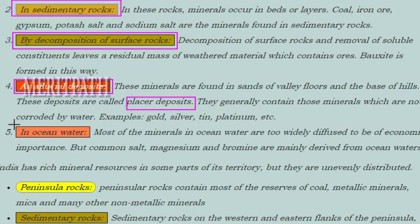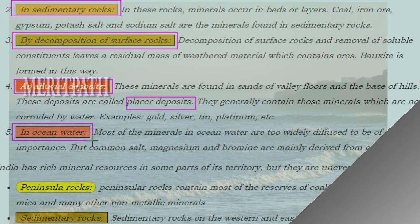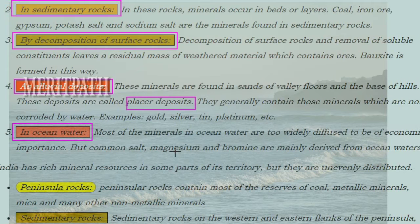Occurrence of minerals in ocean water: most minerals in ocean water are too widely diffused to be of economic importance. However, common salt, magnesium, and bromine are mainly derived from ocean waters.